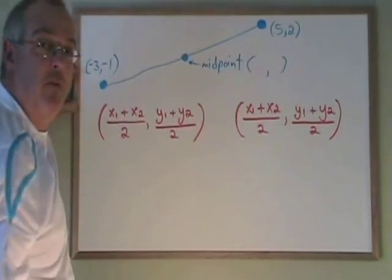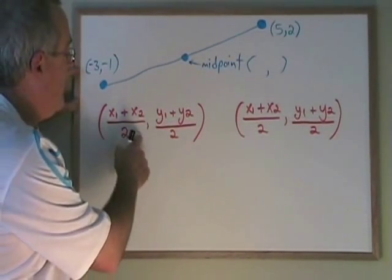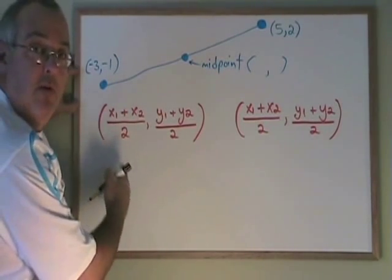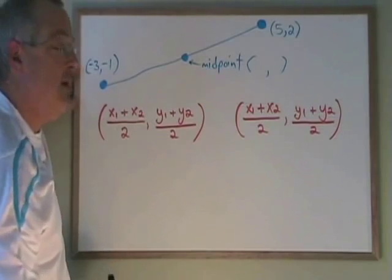We want to know what are the x and y coordinates of the midpoint, and we will use this formula to find it. The formula says x1 plus x2 over 2, y1 plus y2 over 2.